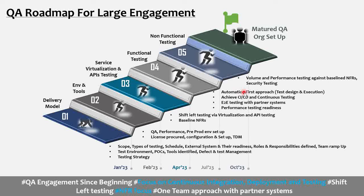Step 4 is functional testing, where the application and partner systems are available and you're ready to do end-to-end testing. The key question here is: are you choosing an automation-first approach? You don't want to spend excessive time on manual testing because this testing is iterative — you get a version, test it, find defects, get a fix, and repeat across multiple iterations in a large program.